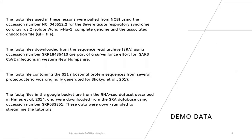The data that you'll use in this module comes from several different sources. You'll use FASTA files that were downloaded from NCBI and correspond to the Severe Acute Respiratory Syndrome Coronavirus 2 isolate Wuhan Hu 1. FASTA files will also be downloaded from the SRA archive and are part of a surveillance effort for SARS-CoV-2 infections in Western New Hampshire. There's a FASTA file containing ribosomal protein sequences, and lastly, we'll be using FASTQ files in the Google bucket from an RNA-Seq dataset described by Himes et al.